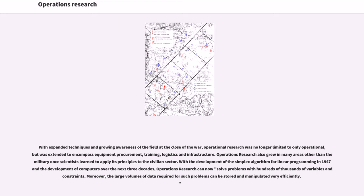With expanded techniques and growing awareness of the field at the close of the war, operational research was no longer limited to only operational, but was extended to encompass equipment procurement, training, logistics and infrastructure. Operations research also grew in many areas other than the military once scientists learned to apply its principles to the civilian sector. With the development of the simplex algorithm for linear programming in 1947 and the development of computers over the next three decades, operations research can now solve problems with hundreds of thousands of variables and constraints. Moreover, the large volumes of data required for such problems can be stored and manipulated very efficiently.